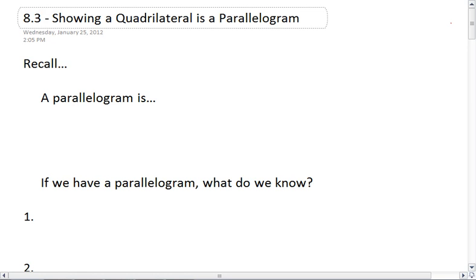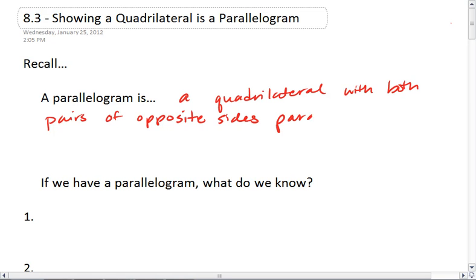Section 8.3, showing a quadrilateral is a parallelogram. Recall, we know that a parallelogram is a quadrilateral with both pairs of opposite sides parallel. So essentially, we have one pair of opposite sides parallel and then a second pair parallel.